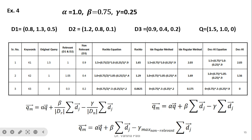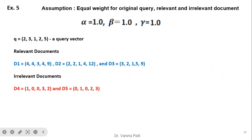Exercise 4: Multiple relevant documents (d1 and d2) and one irrelevant document (d3) are given as vectors. Since there are multiple relevant documents, we take their average to represent the centroid. For keyword k1, the average of d1 and d2 is computed (e.g., (0.8 + 1.2)/2 = 1.0); similarly for other keywords. The irrelevant document needs no averaging since there is only one. The same formula is then applied with these averaged values.